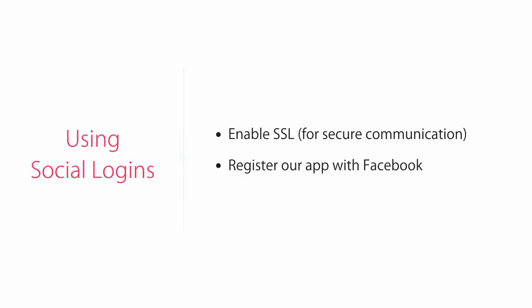Now let's look at the mechanics. In order to use social logins, there are two steps we need to make. First, we need to enable SSL, so our communication with Facebook will be on a secure channel. And second, we need to register our application with Facebook to get an application ID and a secret. In the next video, I will show you how to do these steps.